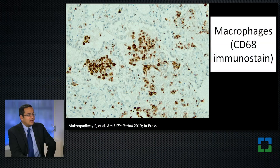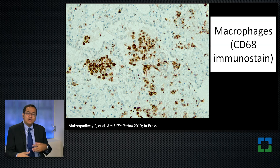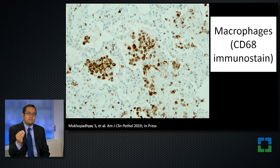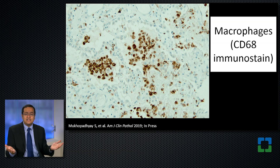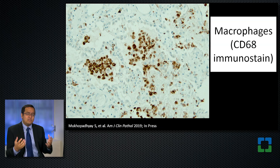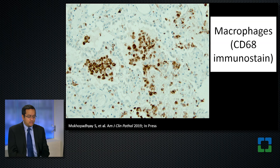That is one major finding that's going to be a center of debate in coming days. Here's another way to look at macrophages — an immunohistochemical stain for CD68, a marker present on macrophages. Everything that's brown is a macrophage. Clearly there are a lot of macrophages in these lungs, increased in some cases. Some of them have lipid and look foamy, but they do not have features of exogenous lipoid pneumonia.